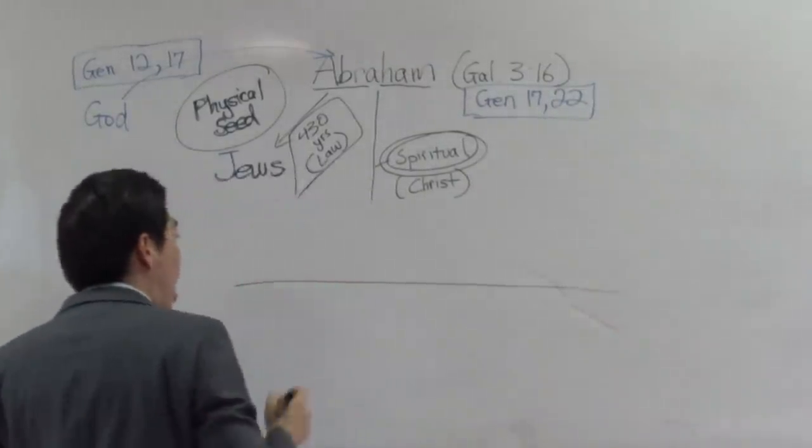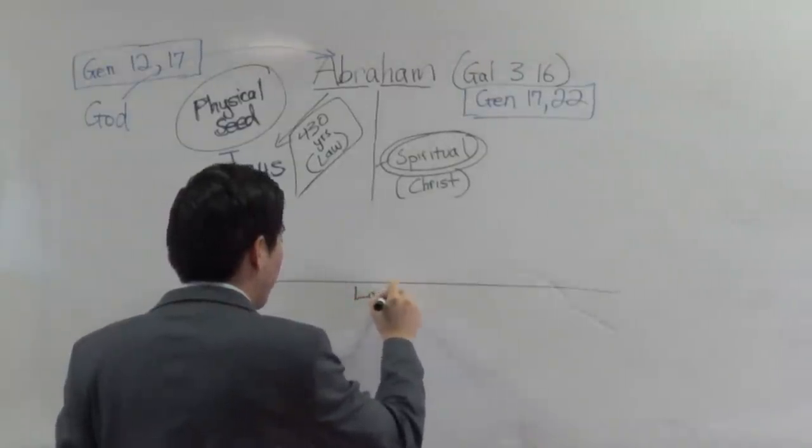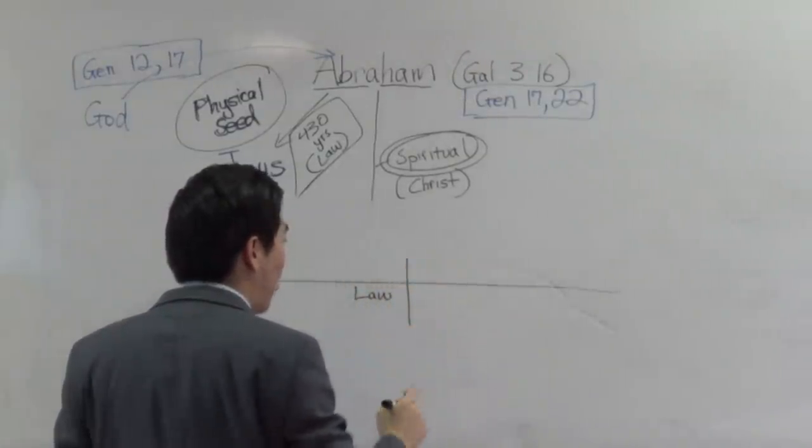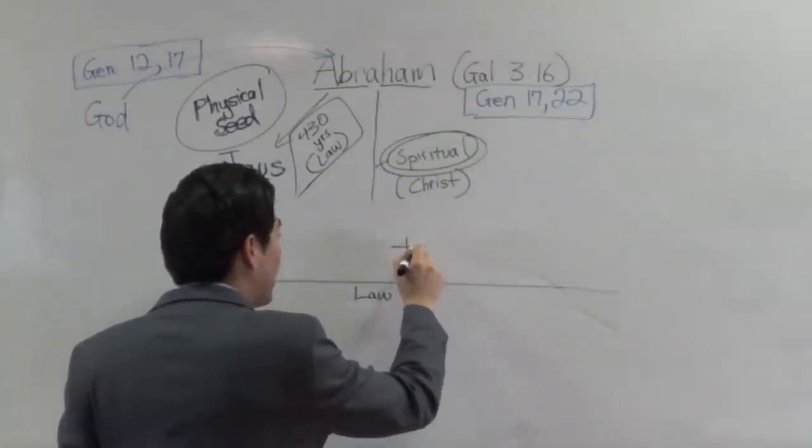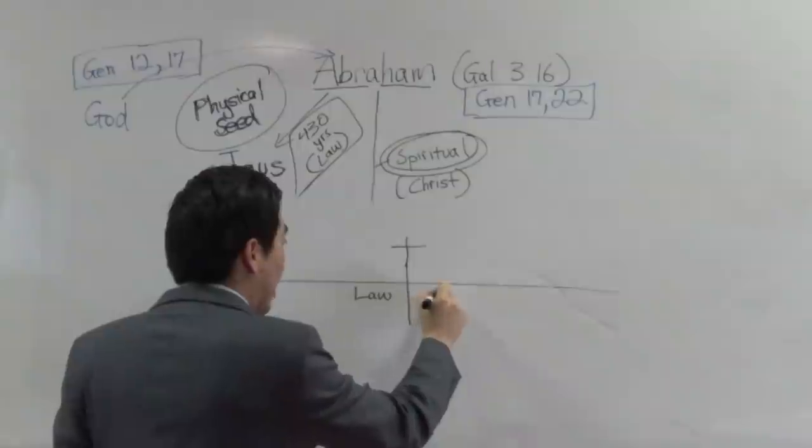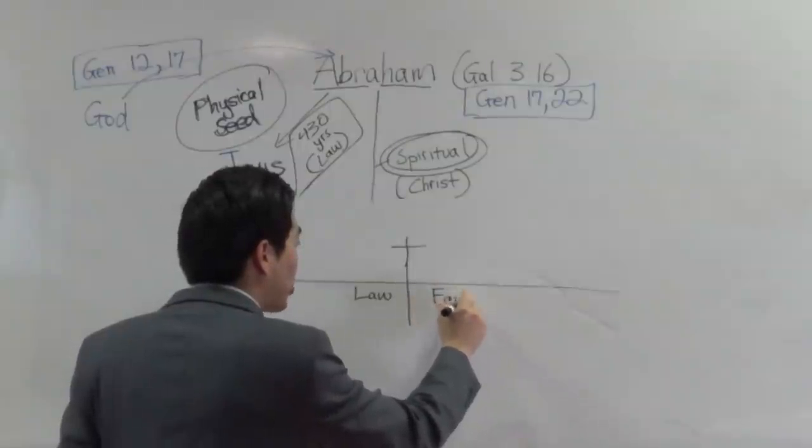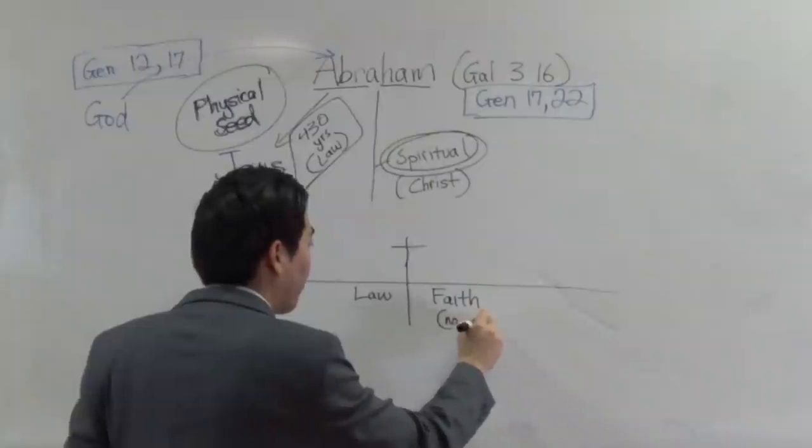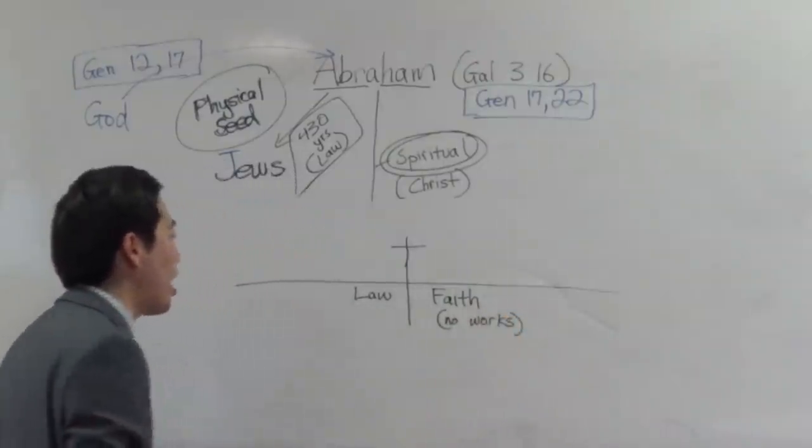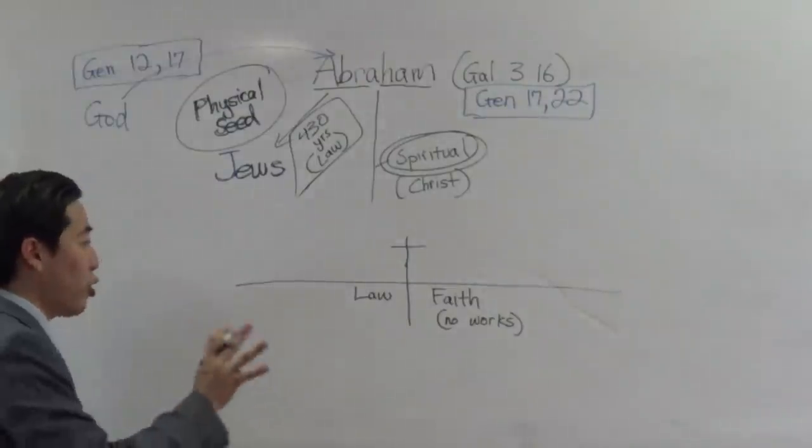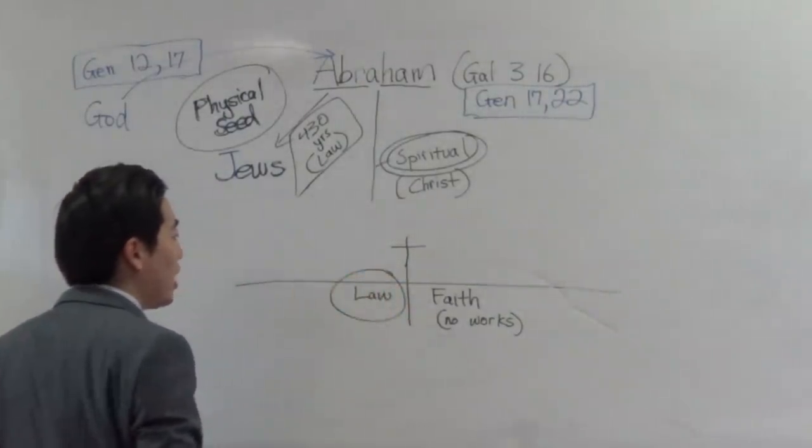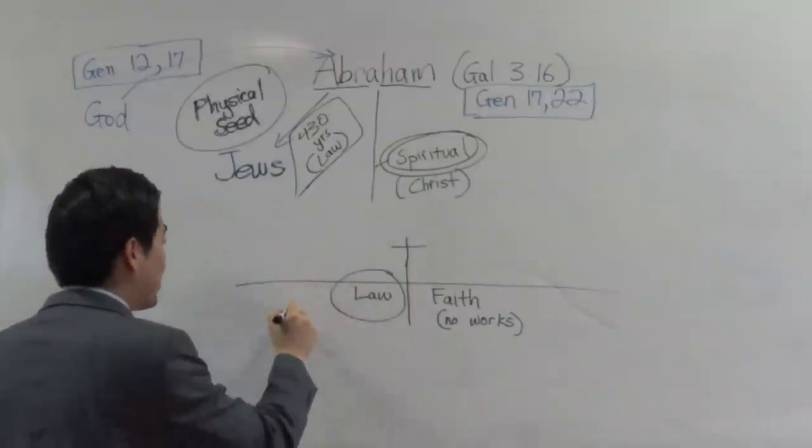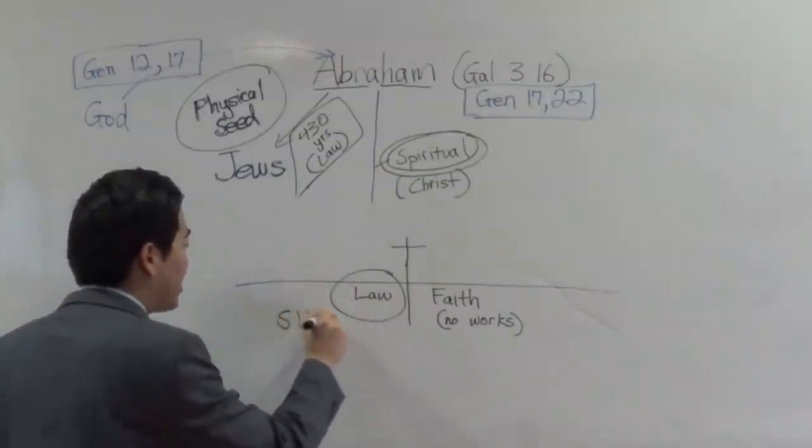As we look at the timeline of the dispensation right here, God said that he gave the law, right? When he gave the law right here, and pretend this is the cross of Jesus Christ when he died on the cross. And then now we're in the age where it's salvation by faith, right? So that means no works. Now as we come over here, I'm going to show you something. What was the point of the law? It was added because of sins. That's the issue here. Sins is the issue.